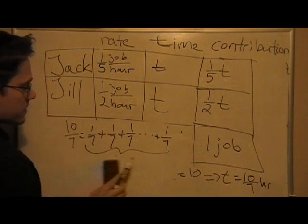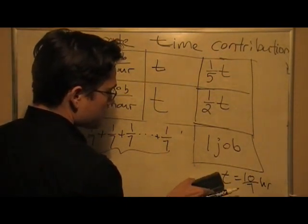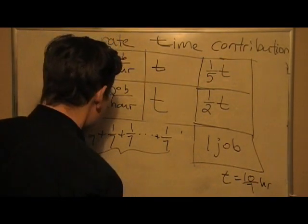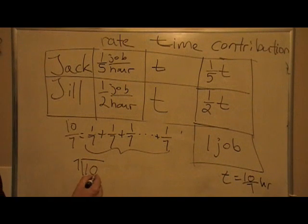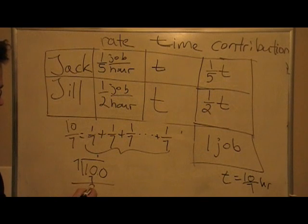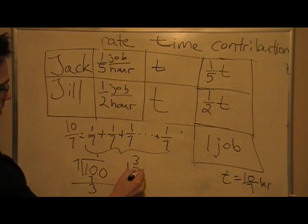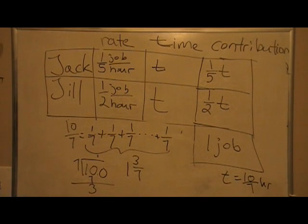So, in our case, what does this mean? Well, we'll translate as follows. Ten divided by seven is... It doesn't go into one, it goes into ten one time. So, we have one... So, we have one and three-sevenths of an hour.